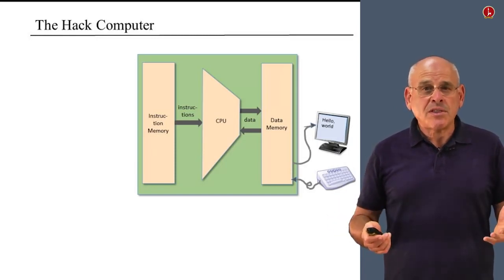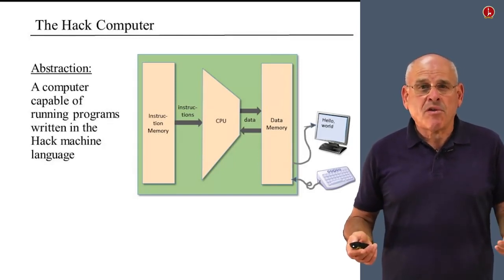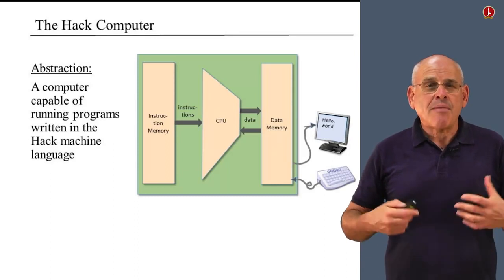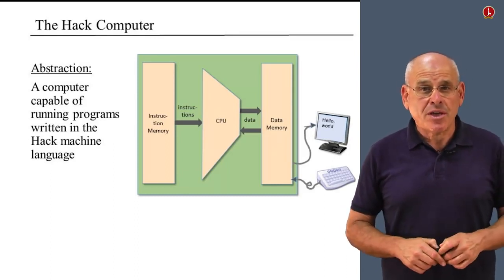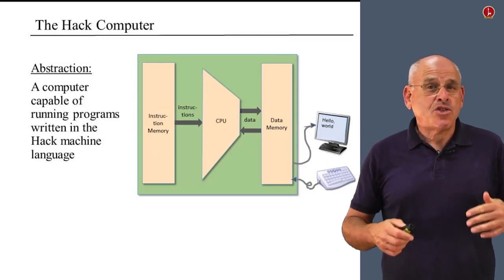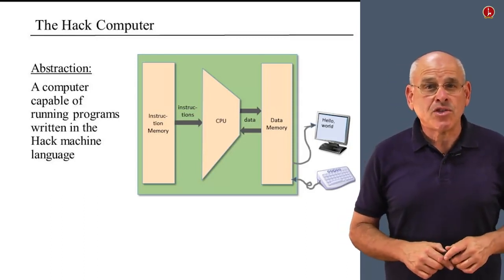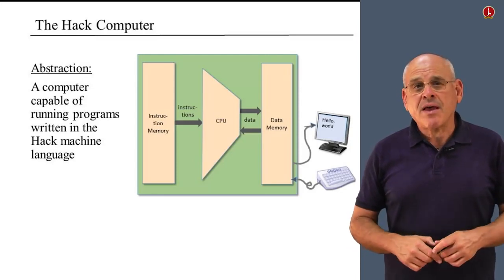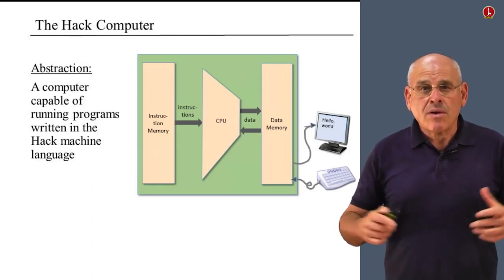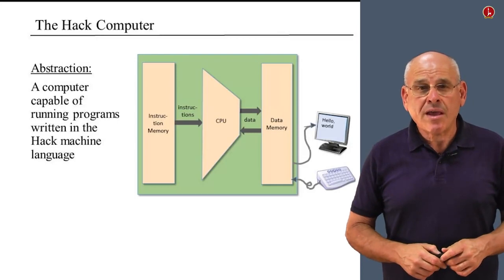This is how the computer looks. It pays off to think about the abstraction. From the user's or programmer's perspective, we have a black-box computer that enables us to write and run programs in the Hack machine language. This is not to be taken lightly — if we write a Java compiler that translates from Java to Hack machine language, this computer will be able to run Java programs. Abstractly, we have a general purpose computer that can run any program translatable into Hack native code.